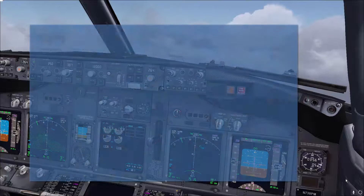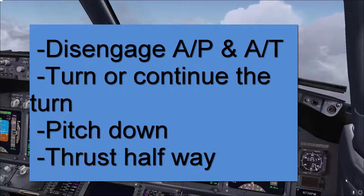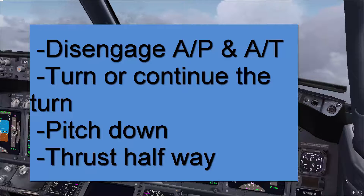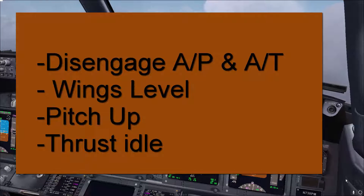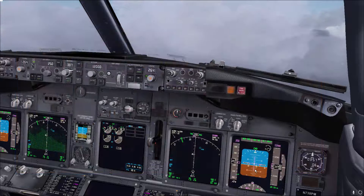To summarize: for the nose high, you want to turn or continue the turn, pitch down, power halfway, then at 5 degrees pitch up go wings level, adjust power as needed, trim the airplane, and once everything is under control re-engage the automation. For the nose low, if you are in a turn go wings level, pitch up, and thrust to idle. Maintain 5 degrees pitch up and let the speed decrease. When it is around 250 knots, go halfway on the thrust levers, verify the speed, and adjust power as needed. Trim the airplane, and once everything is under control re-engage the automation — always from left to right. That's a good technique.